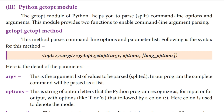In this video we are going to learn about the Python getopt module. The getopt module of Python helps you to parse, split command line options and arguments. This module provides two functions to enable command line argument parsing.